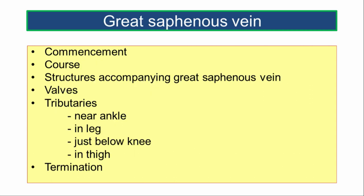Moving on to the great saphenous vein. We will study it as its commencement, course, structures accompanying the great saphenous vein, the valves, and tributaries — those near the ankle, in the leg, just below the knee, in the thigh — and its termination.